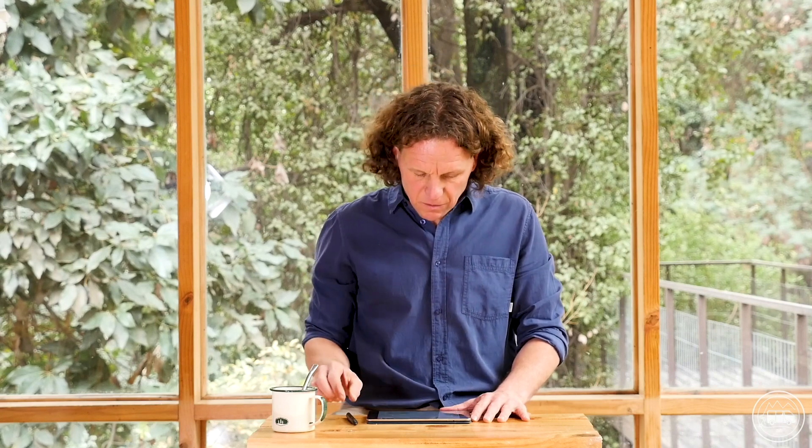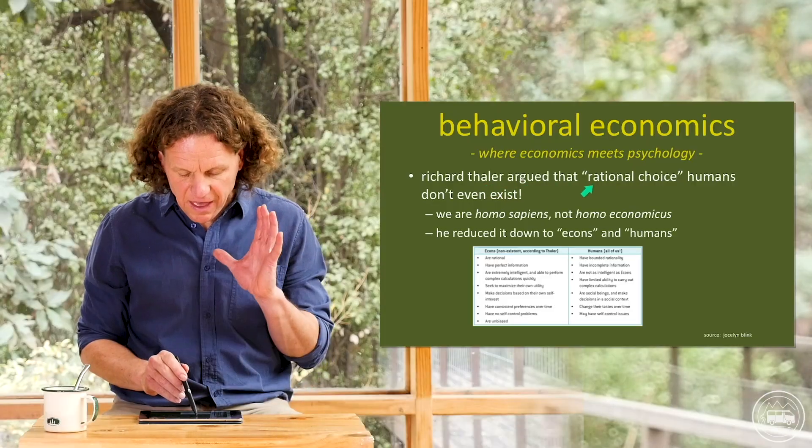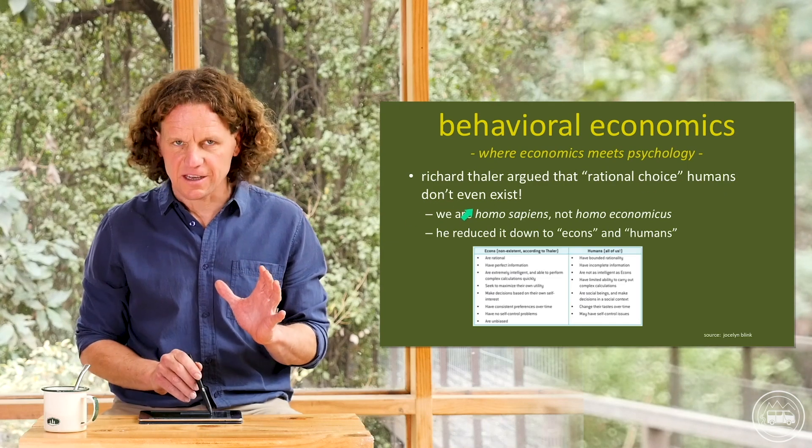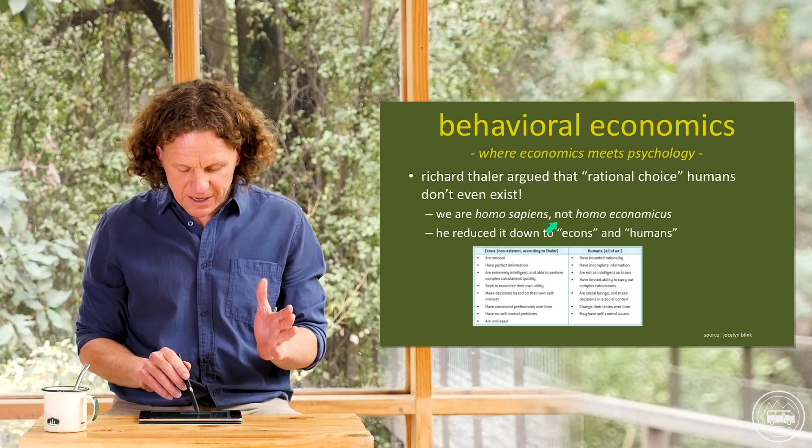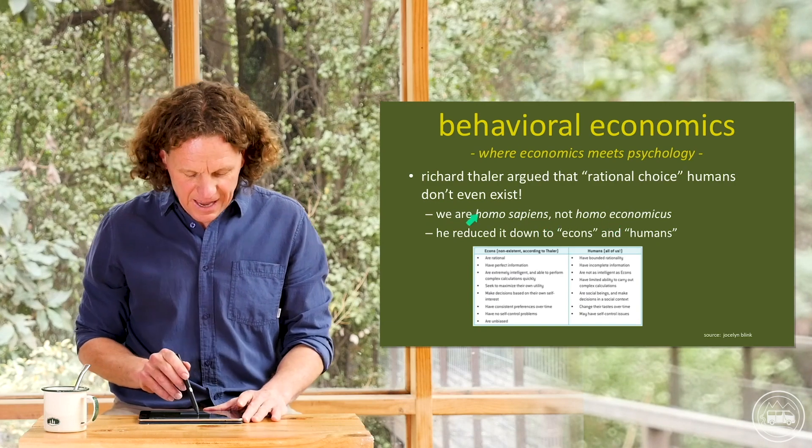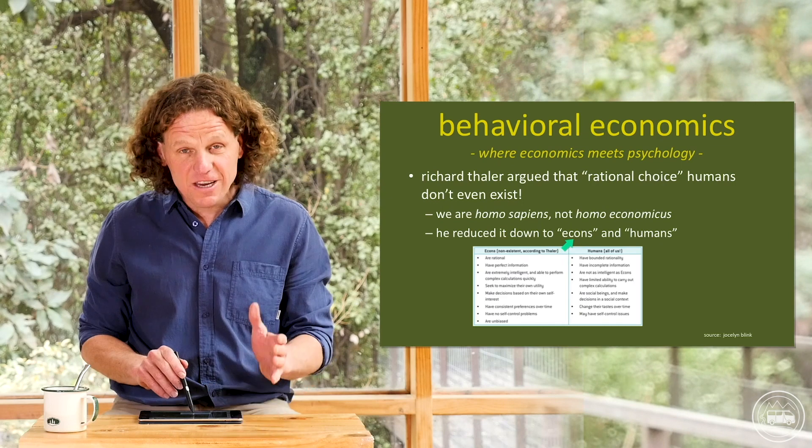Behavioral economics challenges these underlying assumptions by saying that we are human beings, not economic agents who make decisions based purely on self-interest and maximizing our own utility or happiness. Richard Thaler argued that rationally-choosing humans don't even exist — we are homo sapiens, not homo economicus. I really love that distinction.